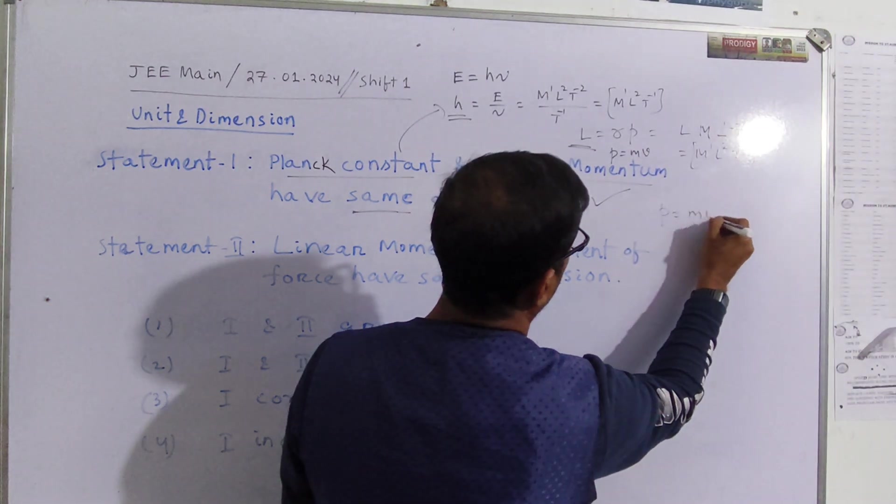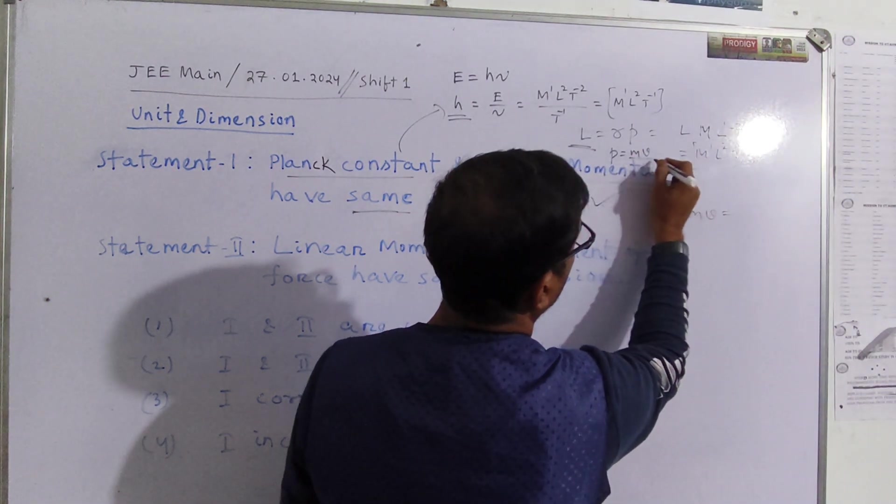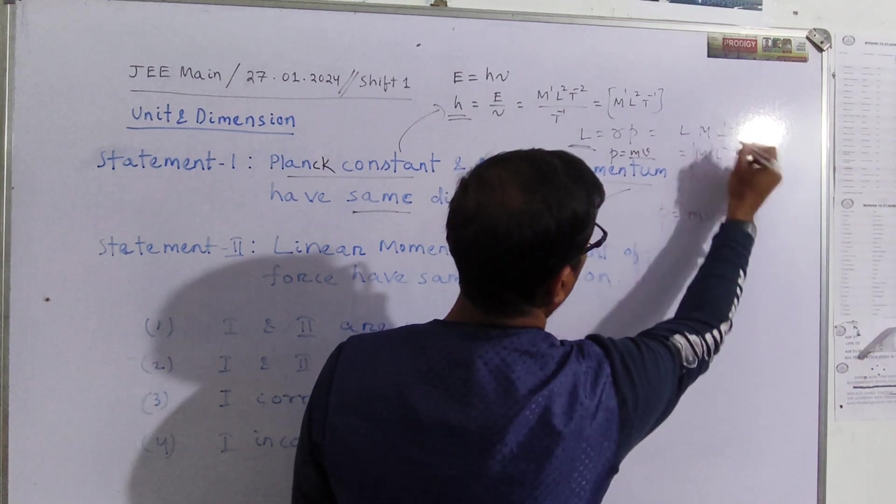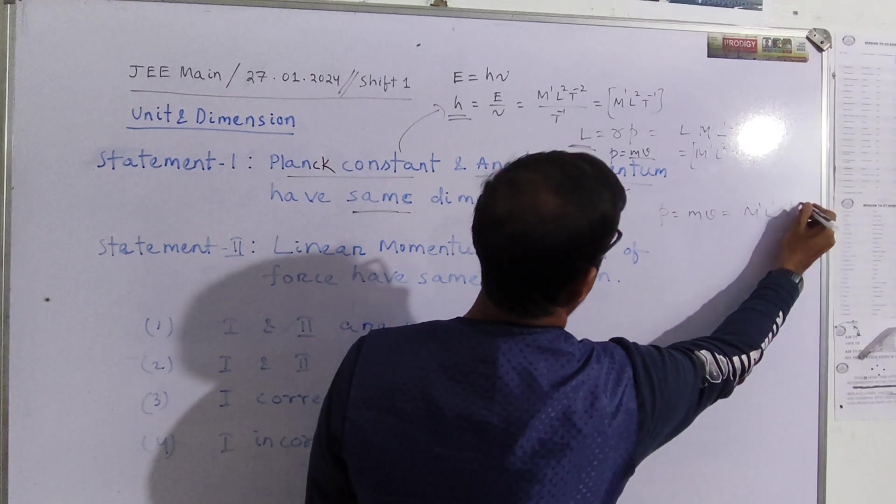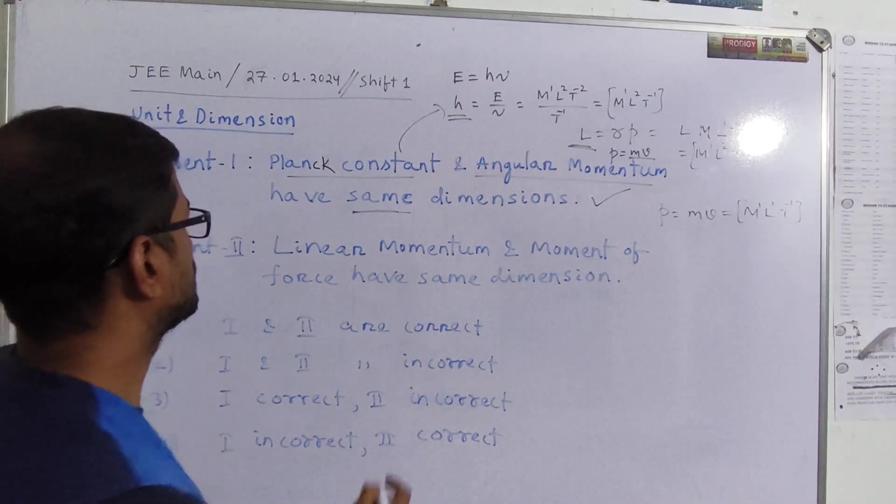Now let us check statement 2, linear momentum and moment of force. Linear momentum p is equal to mv. So dimensional formula will be, we have done it, dimensional formula will be M1 L1 T minus 1. This is the dimensional formula of linear momentum.